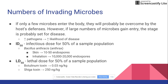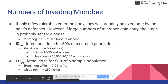Looking at Bacillus anthracis, which causes anthrax, we have different portals of entry: skin and the respiratory system. Through the skin, it only needs 10 to 50 endospores to cause disease, whereas if you're inhaling it, you need 10,000 to 20,000 endospores. So the infectious dose is lower through the skin — meaning anthrax is more potent and more deadly through the skin than through inhalation.